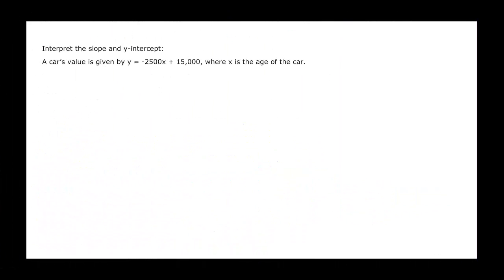So let's look at this problem and again interpret what we know. So it says the car's value is given by y equals negative 2,500x plus 15,000. Well this is our m and this is our b, and we need to know what x and y are as well, then we can really go to town on trying to interpret these. Well x is the age of the car, so it's going to be in years. Its unit is years. And the car's value is what we're talking about, so the value in dollars.